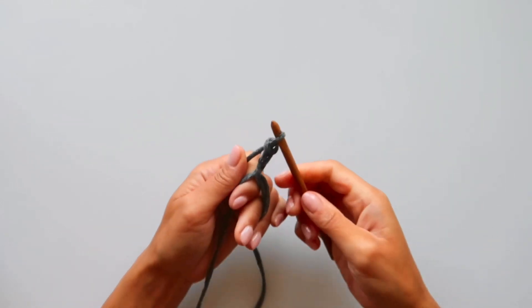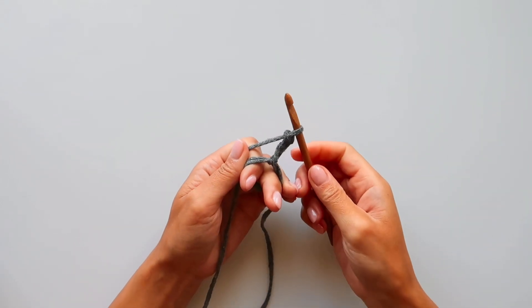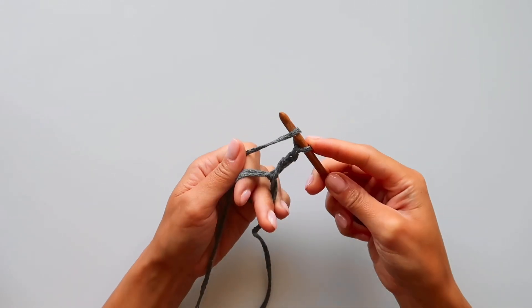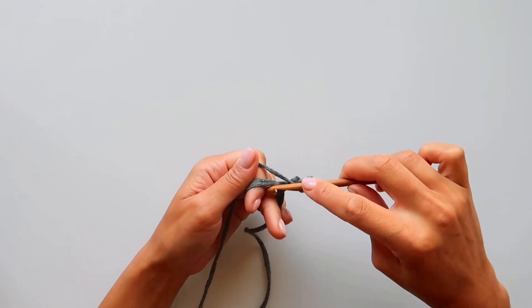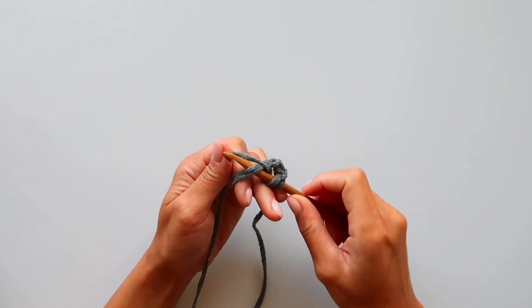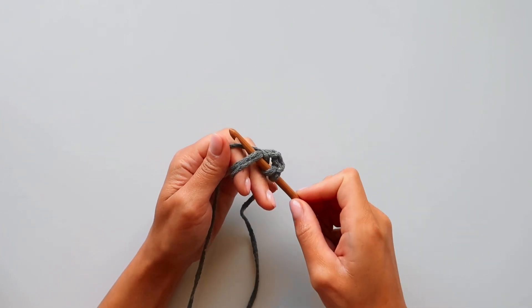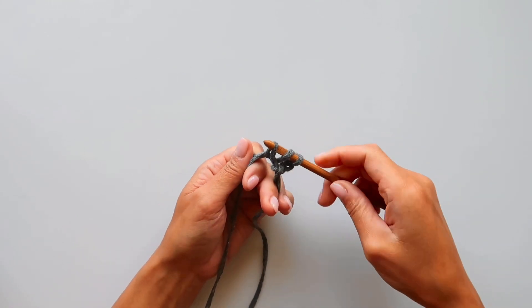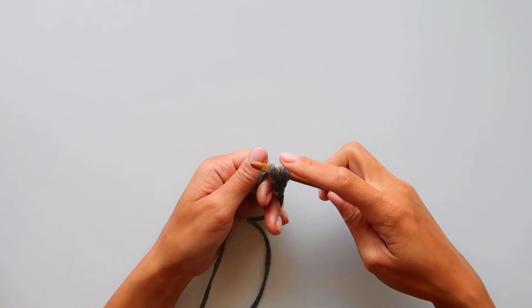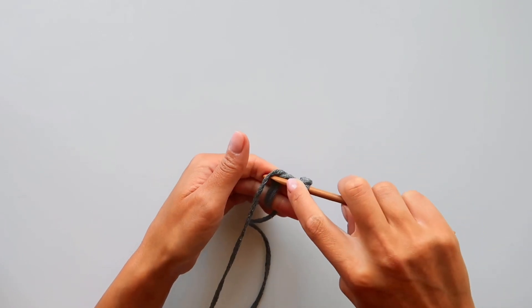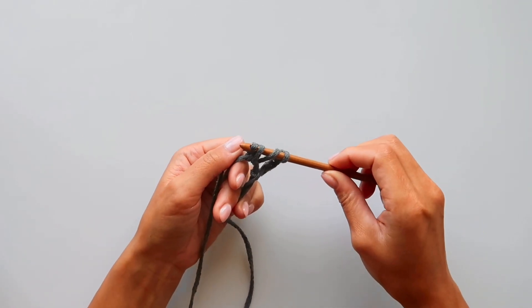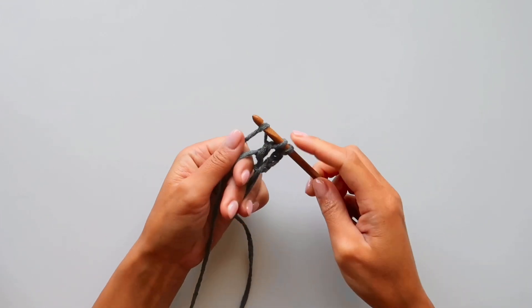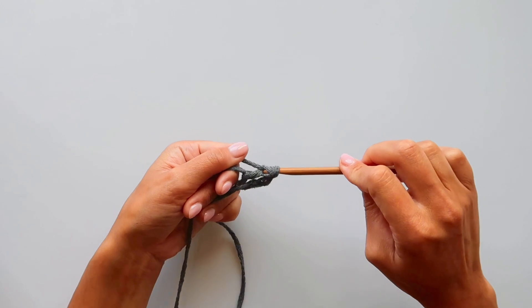And now we will start with the double crochets inside this magic ring by wrapping your yarn, go inside the ring and grab some yarn and come back. Now you have three loops on your hook, and then you will grab some yarn again and pull through two loops, and then you will grab some yarn and pull through the last two.